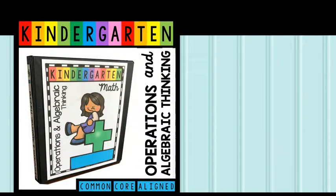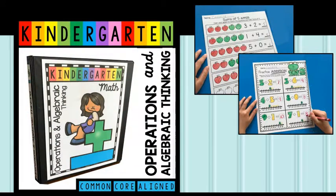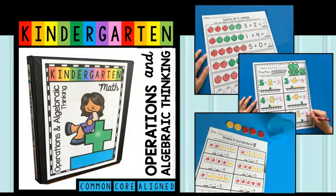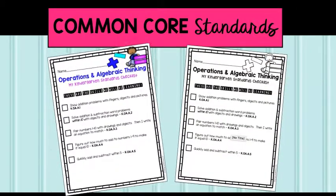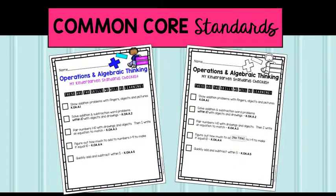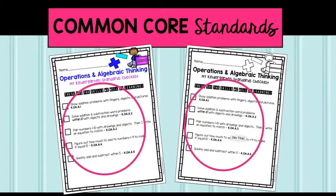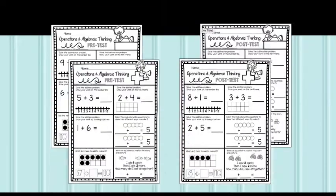This Operations and Algebraic Thinking unit has everything you need to teach the standards in a fun, hands-on way. This unit is aligned with the kindergarten Common Core standards. Included are standard checklists that are a helpful tool for both you and parents. Pre and post assessments aligned to the standards are a valuable tool for measuring student growth throughout the unit.